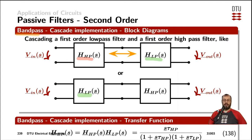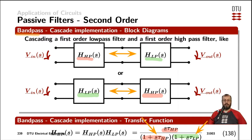We can get the same result by using the lowpass filter first and feeding the input of the highpass filter with the output of the lowpass filter, which again is a cascade connection. We end up having the single zero from the highpass filter in the numerator, and the denominator contains the pole of the highpass filter and the pole of the lowpass filter. The multiplication of those two terms creates a term s squared, and therefore we are speaking about a second-order filter.